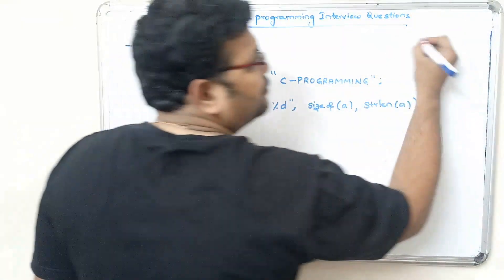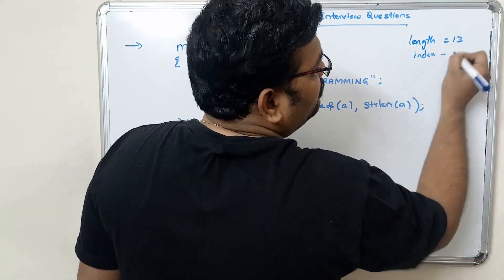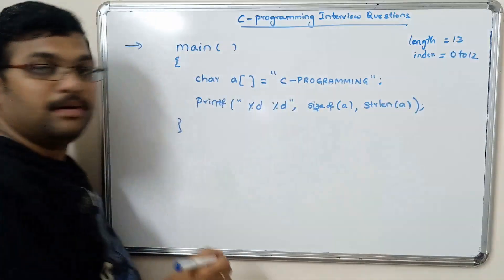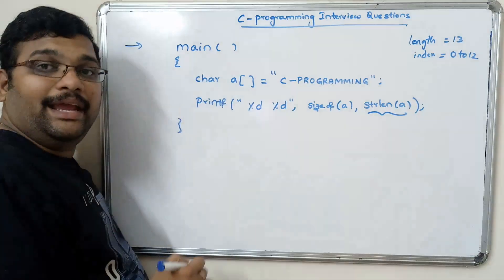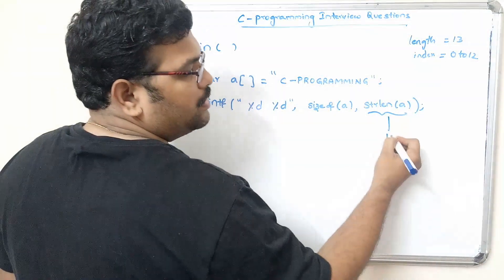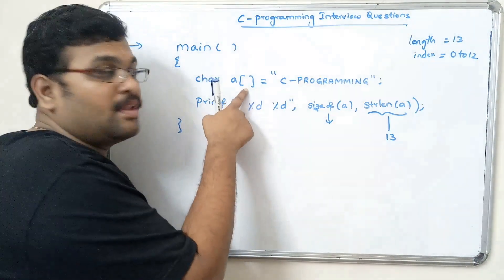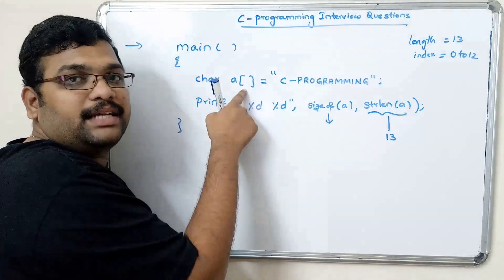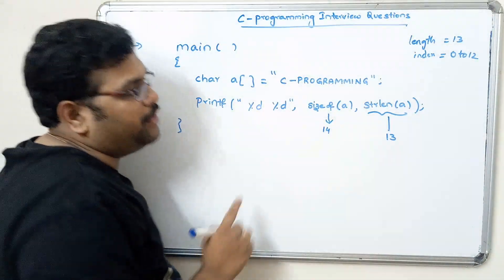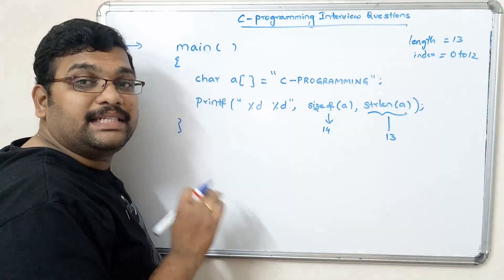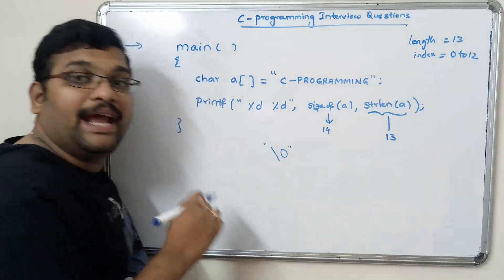The length of the string is 13, so indices start from 0 to 12. As we know, strlen of 'a' will return 13. But what about sizeof 'a'? Here we are not mentioning the size explicitly, but by initialization it will directly take the size — and it is not 13 but 14.